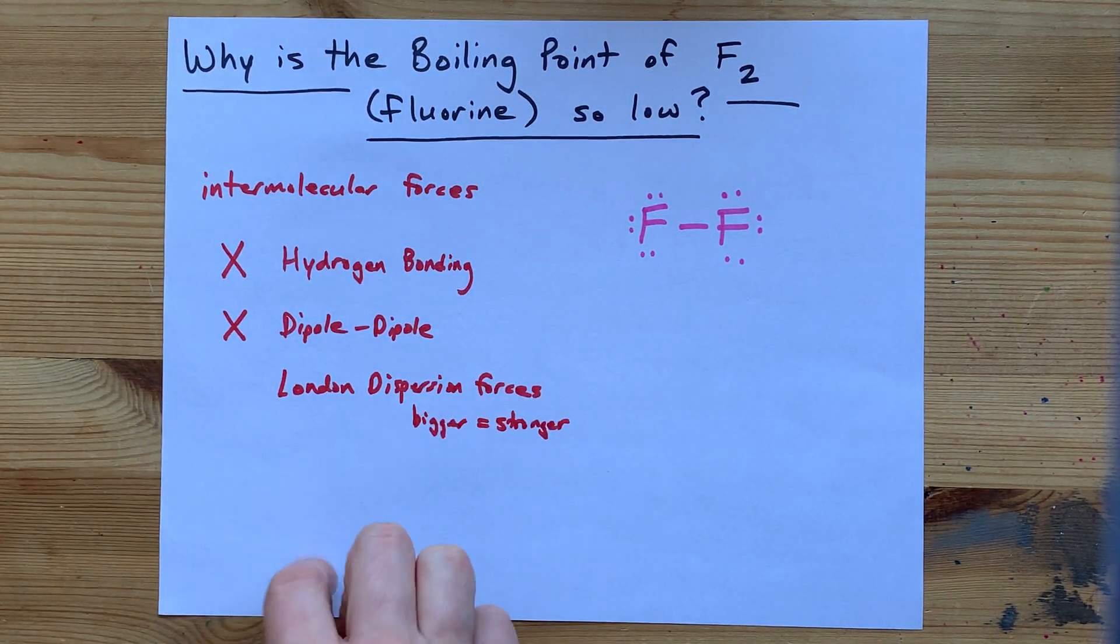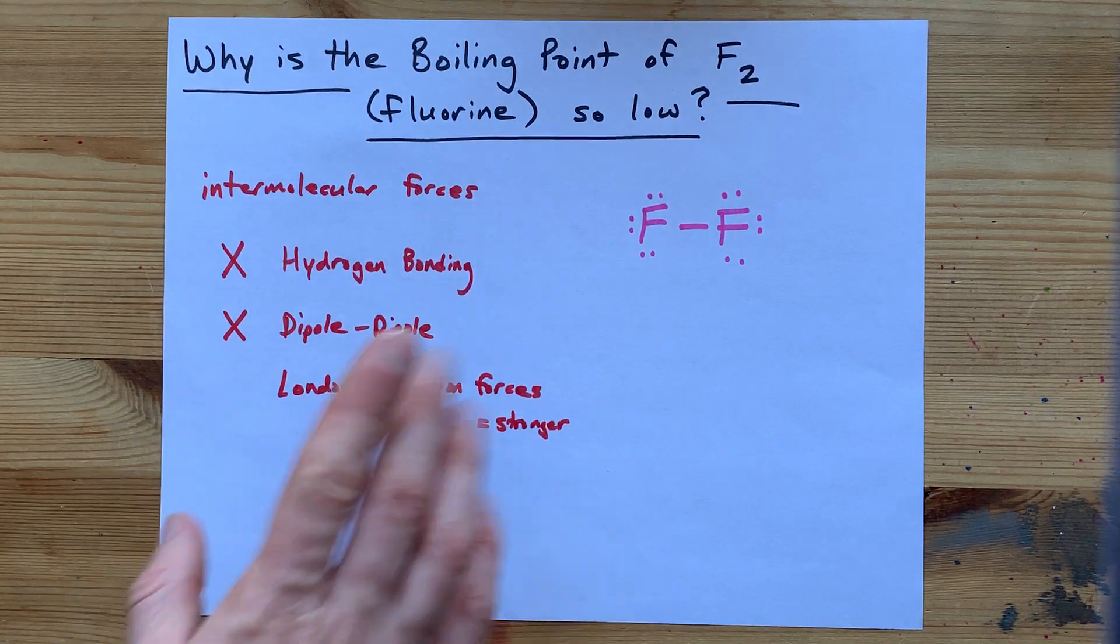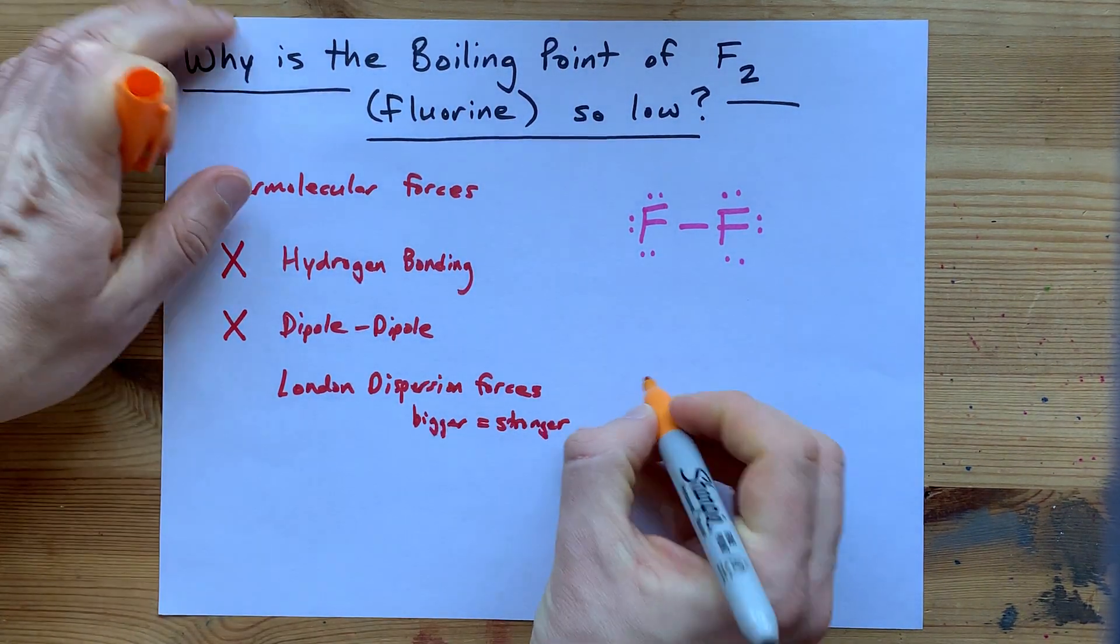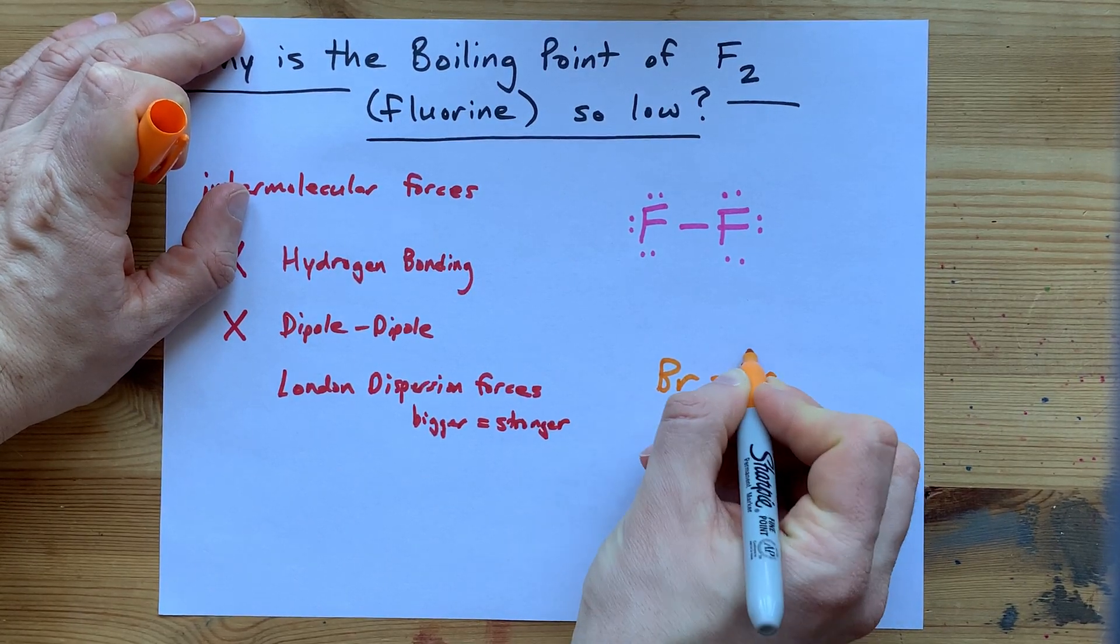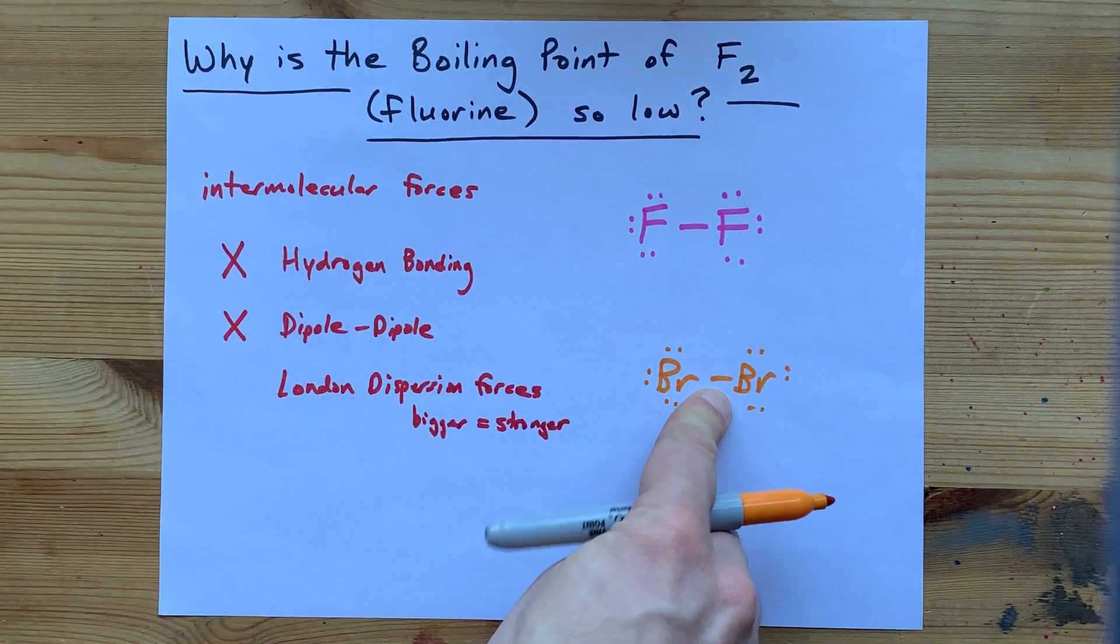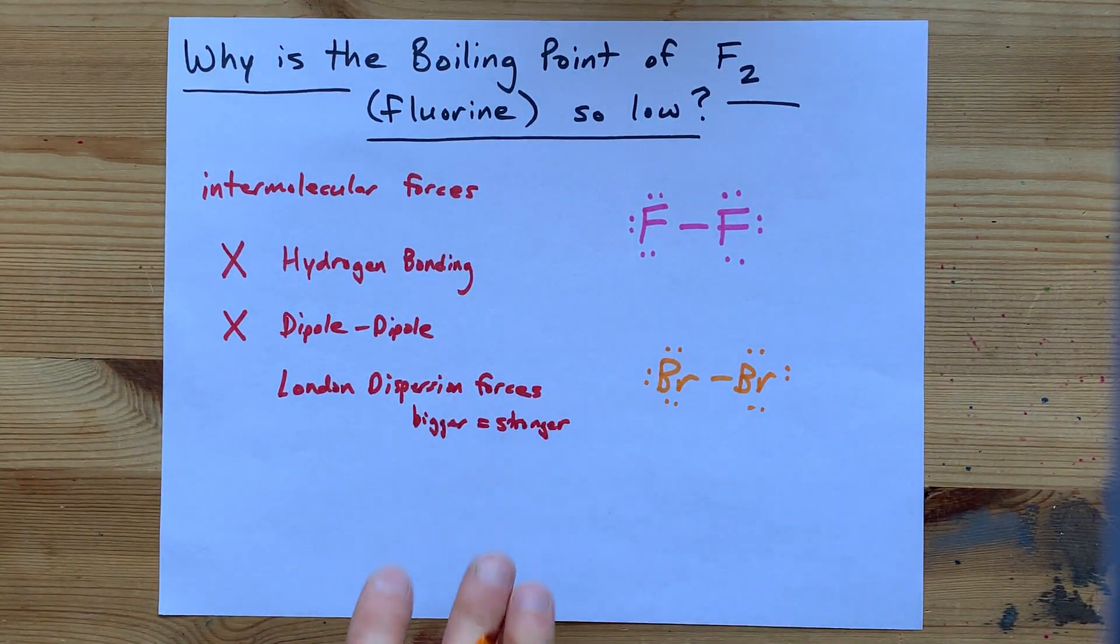So let's talk more about fluorine, and let's compare it to a molecule that's almost exactly the same, like bromine. Br2 has the same single bond between the two and three lone pairs around each one, but bromine is much larger.